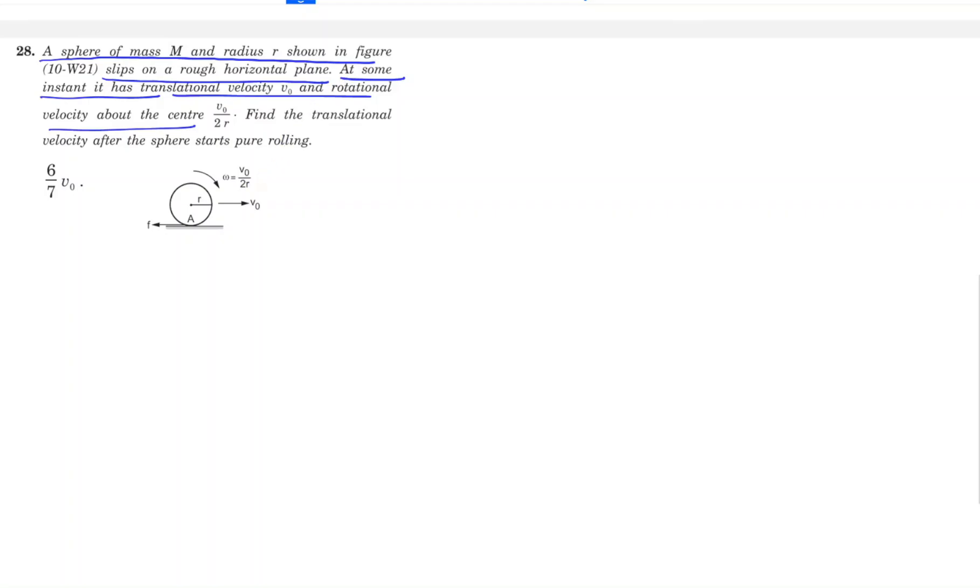I will make this diagram a little bit. This is our sphere. Now, at the bottom of this point, there are two velocities. The center of mass velocity, which is V0, and then omega into R. Omega's value is V0 by 2R. So, you can see that the rotational velocity is very low. This is the problem when the translational velocity is more.